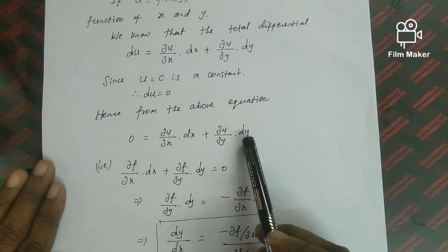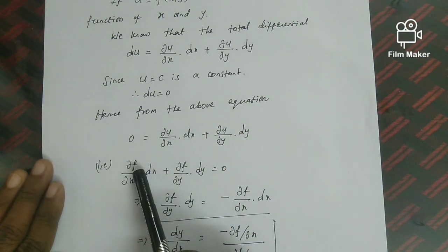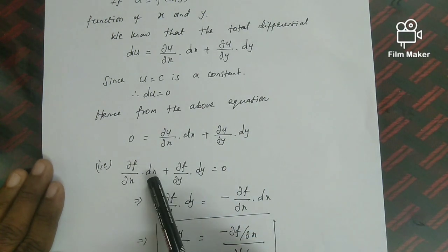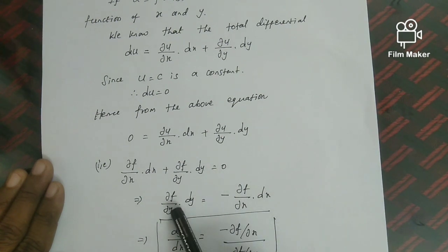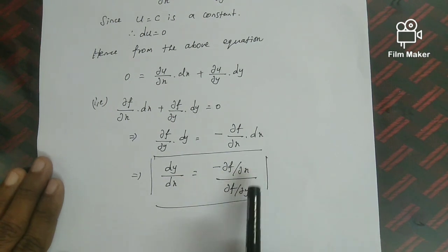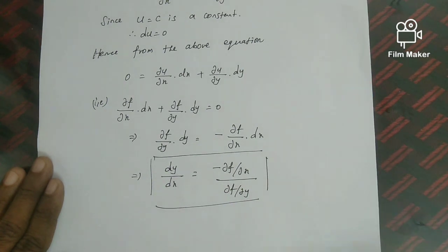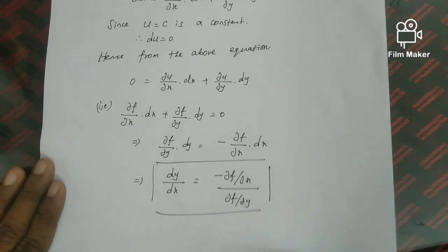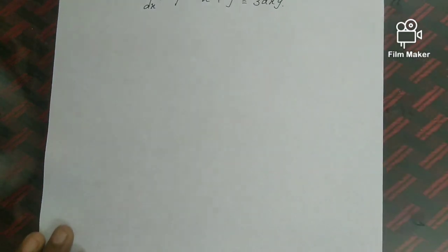Setting du = 0: (∂u/∂x)dx + (∂u/∂y)dy = 0. That is, (∂f/∂x)dx + (∂f/∂y)dy = 0. Moving terms to the right-hand side and dividing, we get dy/dx = −(∂f/∂x)/(∂f/∂y). This total differential dy/dx formula will be used for the problems.